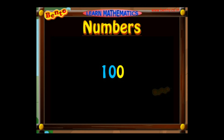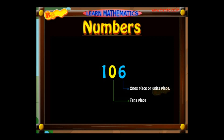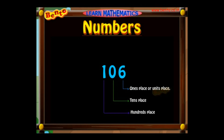The three place values are: units place, tens place, and hundreds place. The leftmost place of a three-digit number is called its hundreds place. The number in that place tells us how many hundreds are present in that number. The number 106 has 6 ones, 0 tens, and 1 hundred in it.